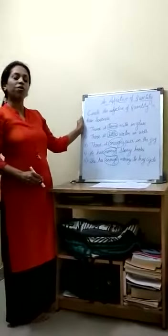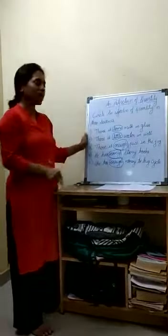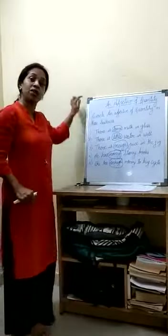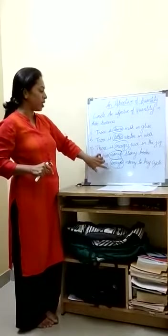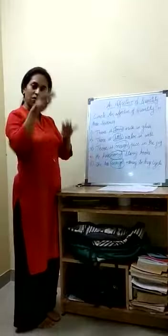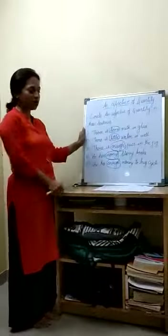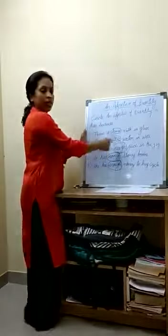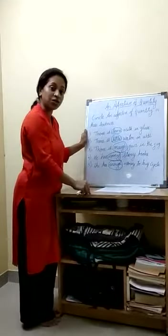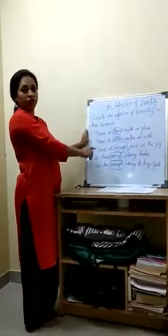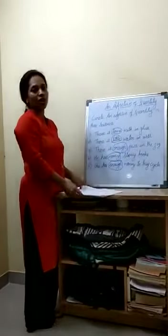So children, today what we learnt? We learnt about an adjective of quantity. Your work is to write the definition I gave in the beginning, and then the examples: some, more, little, many, enough. And then we will circle an adjective of quantity in these sentences. After writing these sentences, we will circle them. This work has to be done in your English notebook grammar part. Hope you understood this. Next class we will learn about an adjective of number. Take care. Bye.